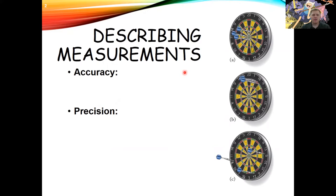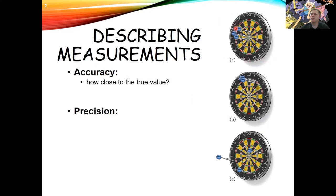These two terms are used interchangeably in common speech, but they're actually not the same thing. Accuracy describes how close your measurement is to the true value. In dartboard A, all of the darts are pretty close to the bullseye, whereas in dartboard B all the darts are pretty far away. So the darts in dartboard A are more accurate.